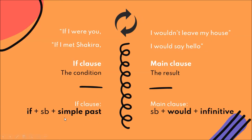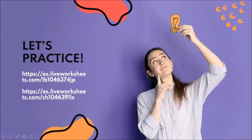Grammar summary: the if clause is 'if' plus subject plus verb in the simple past — for example, 'if I met Shakira.' This doesn't mean 'I met her' in the past — it means 'if I were to meet her,' something imaginary. The main clause is subject plus 'would' or 'wouldn't' in the negative, plus the infinitive — for example, 'say' or 'leave.' Now let's practice!